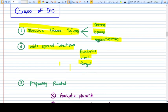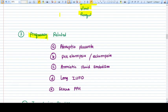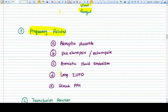The third one, which is important for us, is pregnancy related, because pregnancy is already a hypercoagulable state. When processes like abruption, placenta previa, preeclampsia, eclampsia, amniotic fluid embolism, long IUFD, or severe PPH occur, all these will lead to DIC and further problems in the coagulation system.